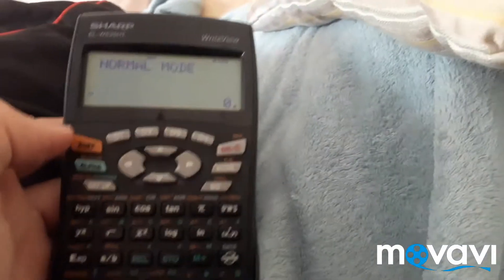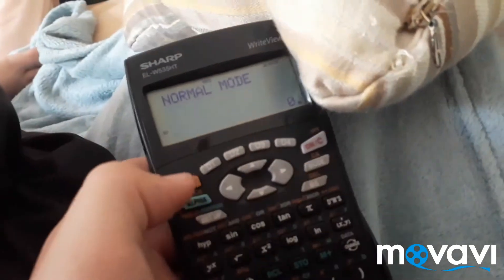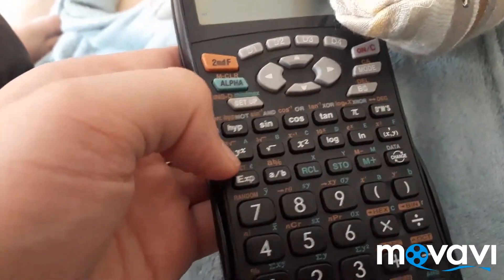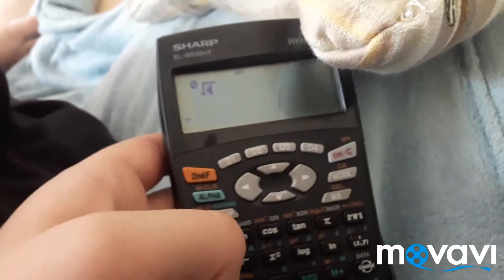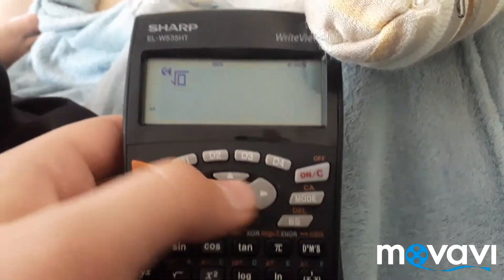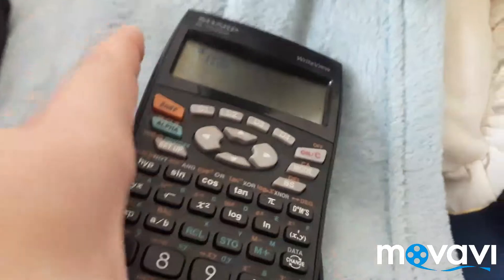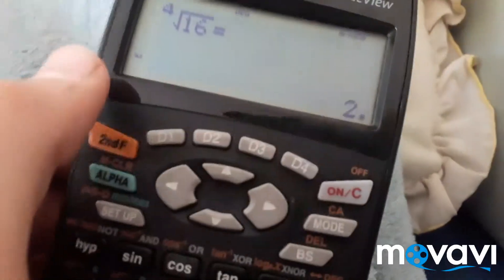And if you want to do stuff like a tesseract root, you're gonna make something like this. Second function. Here. And then you press here. Go over here to choose a number. You could use tesseract root, which is four. And you use sixteen, which gives you two.